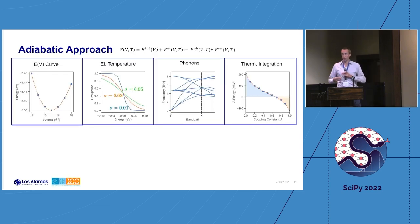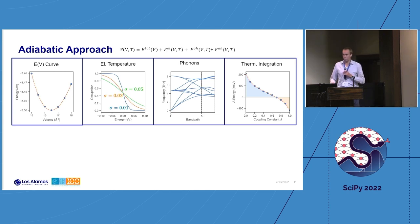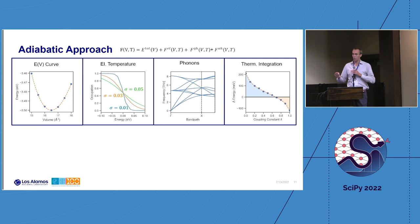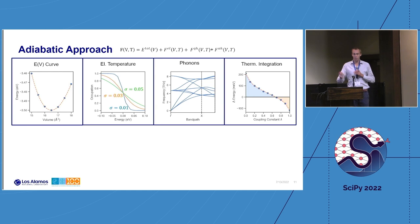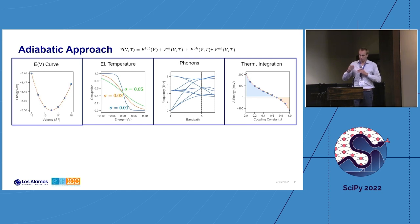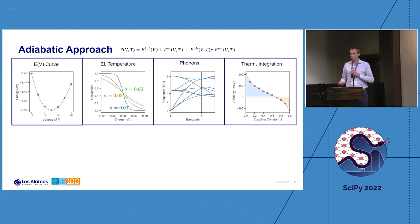The CALPHAD community, which used this information in larger-scale models, previously trusted the upper branch. They really had to make a choice about which experiments to trust. By doing this theoretical prediction and recalculating, we were able to convince them to update the databases. We're now at the point where we can get quantitative agreement from ab initio compared to experiment. How do we get there? By adding the different contributions to the free energy — starting with the energy-volume curve, then electronic temperatures, phonons, harmonic approximations.